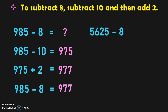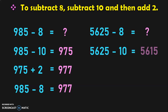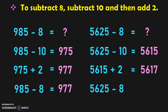Let us do this for a 4-digit number. 5,625 minus 8 is equal to what? First, 5,625 minus 10 is equal to 5,615. Now, 5,615 plus 2 is equal to 5,617. So, the answer for 5,625 minus 8 is equal to 5,617.